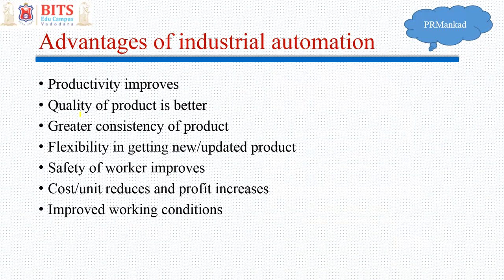Overall working conditions also improve. These are the advantages because of which industrial automation is becoming very popular. In this lecture we have seen what is an industry, what is automation, and what is the role of automation in industry and how it is advantageous. In subsequent lectures we are going to see the architecture of industrial automation, role of PLC and VCS, role of communication protocols such as Modbus and Profibus, and that covers the first unit of industrial automation. Thank you.